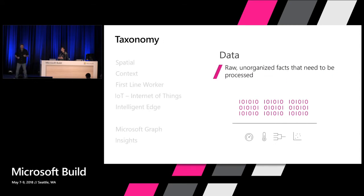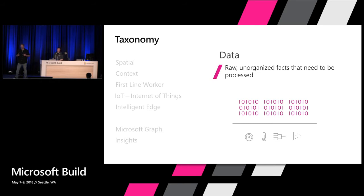Raw data is easy to collect, hard to make sense of. You can collect mountains of data, you can drown in data. But when you structure it, when you put it in context, it can drive action. Typically we see data organized into three buckets: public data - things like census data, traffic data, anything publicly available on the internet; user data - the type of telemetry you've been collecting on users through websites and applications to understand what your customers are up to; and organizational data - data owned by organizations about organizations.